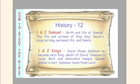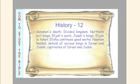First and Second Kings: David chose Solomon to become next king. Then comes the death of David, Solomon's reign, the building and dedication of the temple, the Queen of Sheba's visit, Solomon turning from the Lord, Solomon's death, and the divided kingdom. We then see the northern evil kings, Elijah's work, Judah's kings, Elijah being taken, Elisha continuing good works, Naaman healed, details of various kings in Israel and Judah, and the captivity of Israel and Judah.